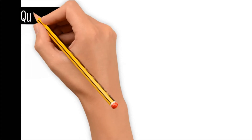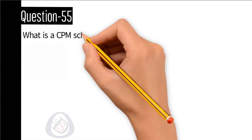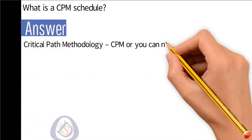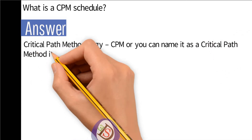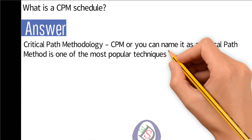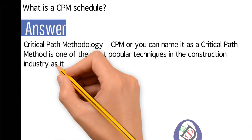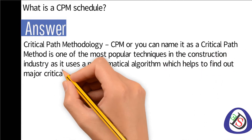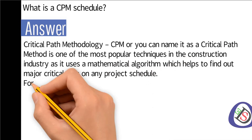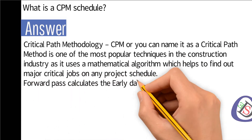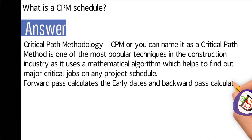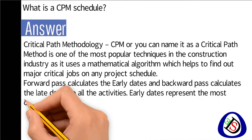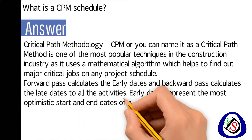Question number 55: What is a CPM schedule? Answer: Critical Path Methodology, or CPM, is one of the most popular techniques in the construction industry. It uses a mathematical algorithm which helps to find out major critical jobs on any project schedule. The forward pass calculates the early dates and the backward pass calculates the late dates for all activities.